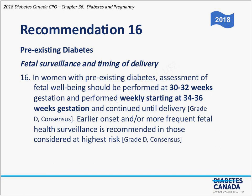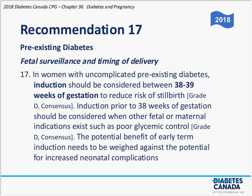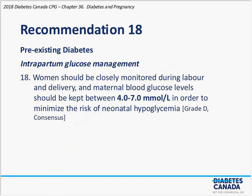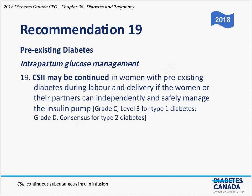I'm not an obstetrician, so fetal surveillance and timing of delivery are generally handled by the maternity team. During active labor — for type 1, type 2, and gestational diabetes — we aim for blood sugars between 4 and 7 millimoles per liter to reduce the risk of neonatal hypoglycemia. If patients are on insulin pumps during labor and feel comfortable continuing, the evidence suggests they should be encouraged to do so, as outcomes appear favorable. Unless there are extenuating circumstances requiring a switch to an insulin infusion, patients may generally remain on pumps.